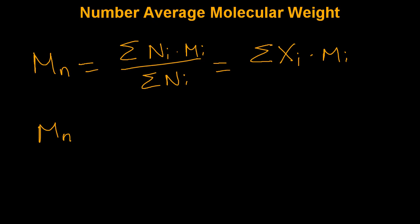Sometimes it's more convenient to define samples and determine the number average molecular weight using weight fractions. To do this, it is equal to 1 over the sum of the weight fraction of chains with a certain molecular weight divided by their molecular weight.